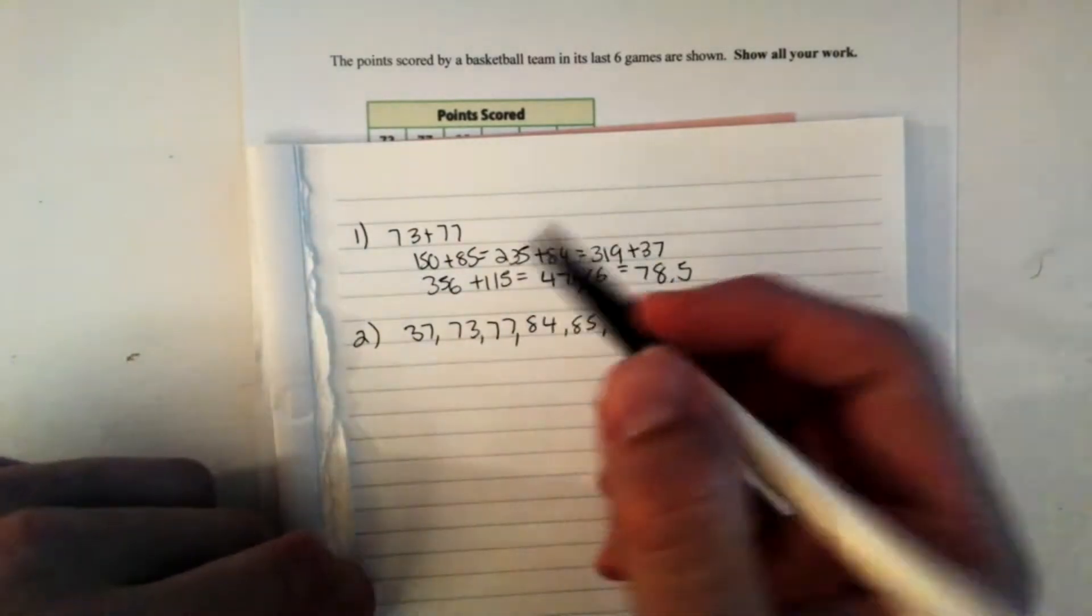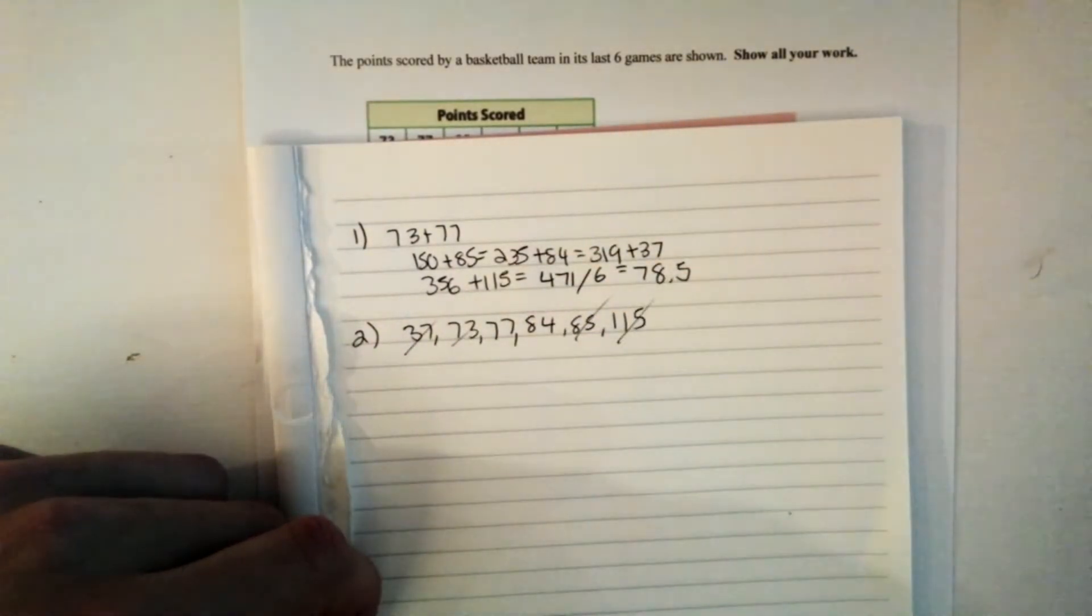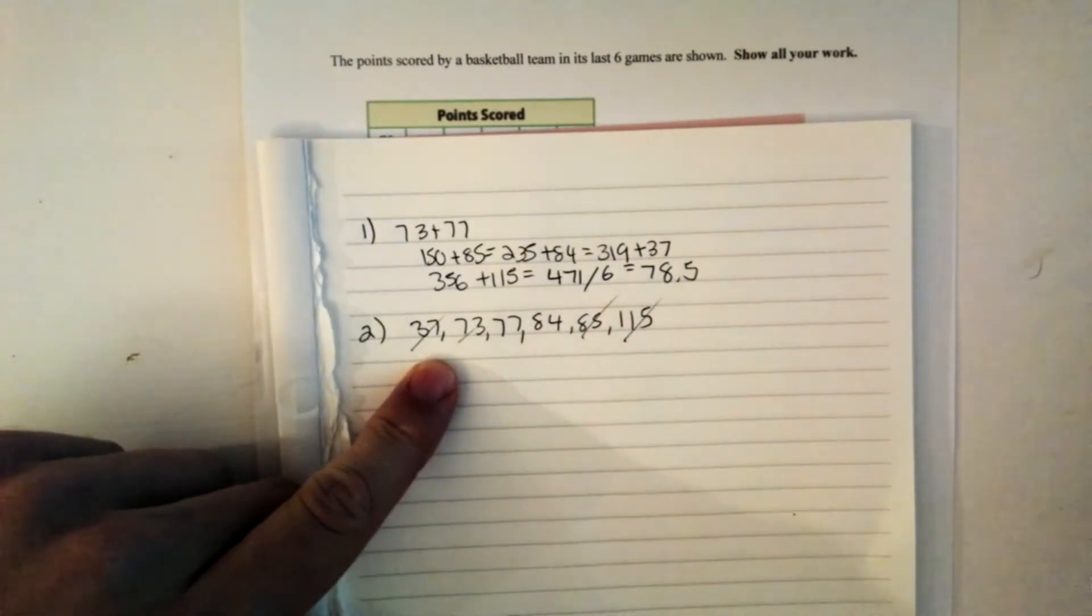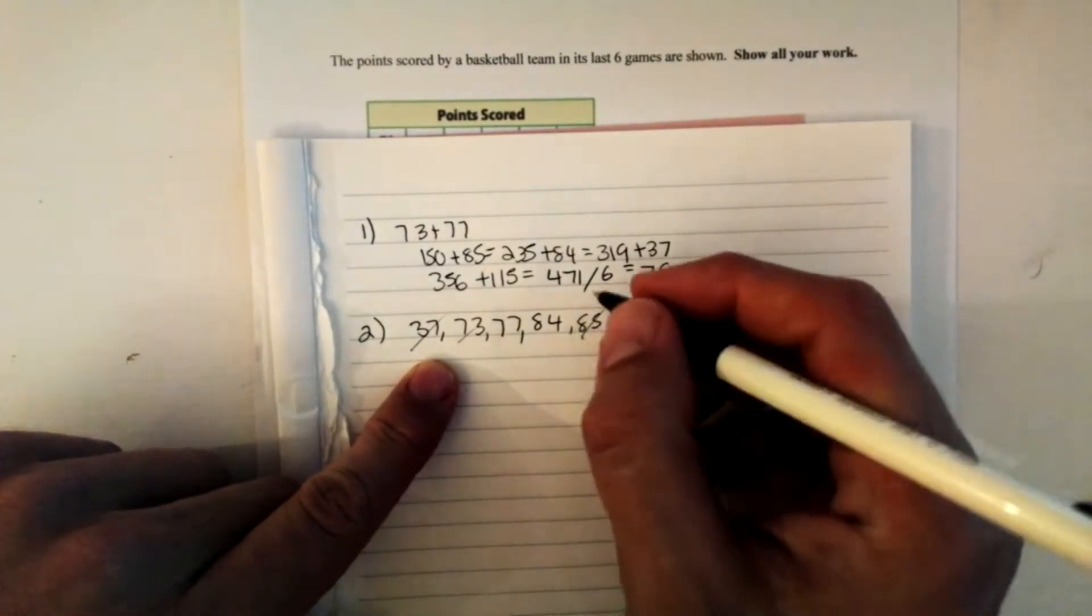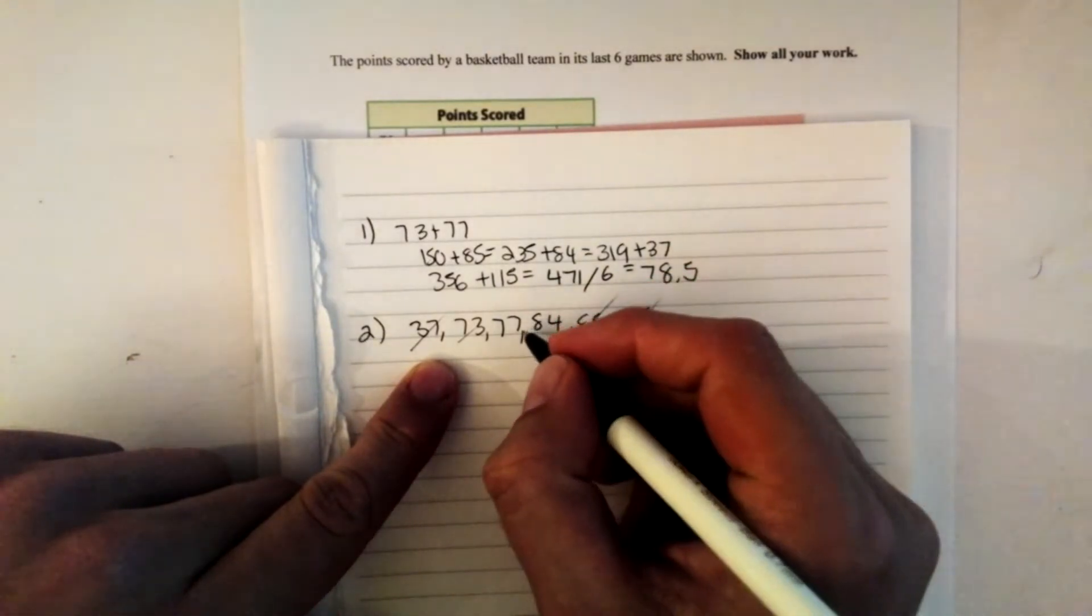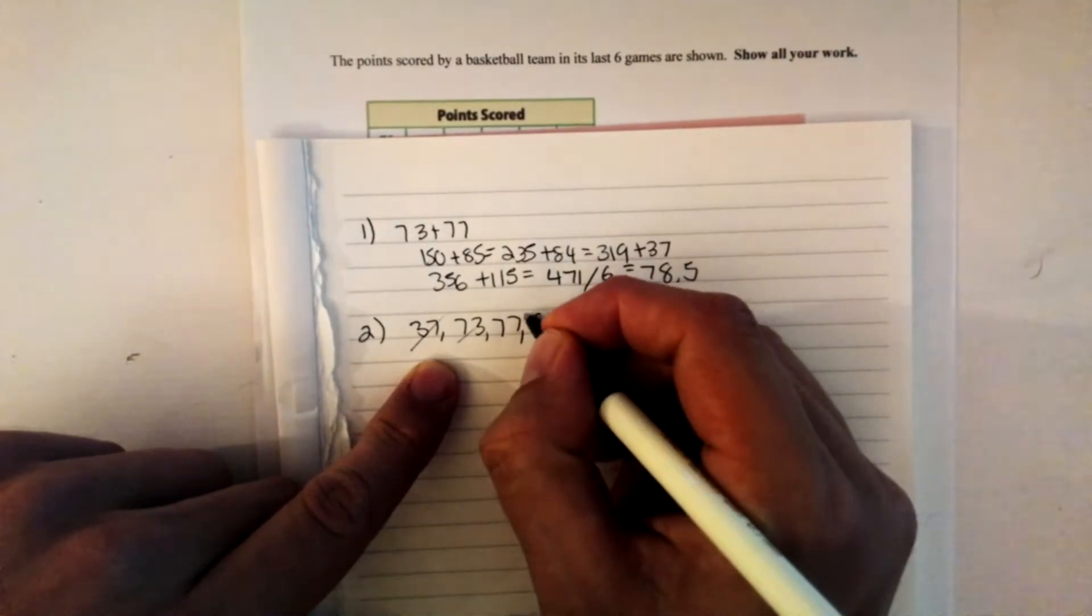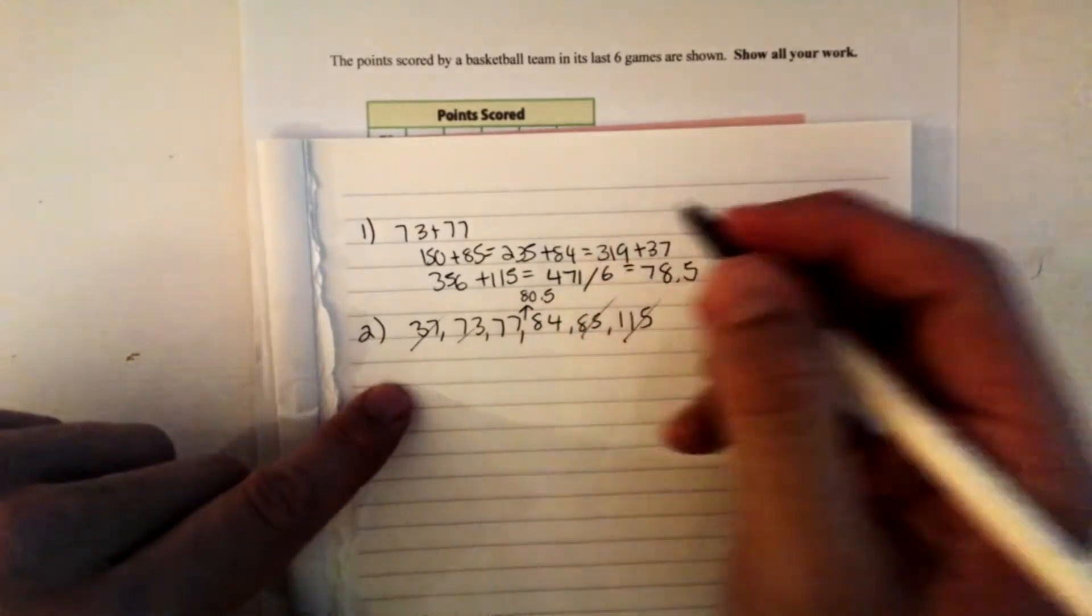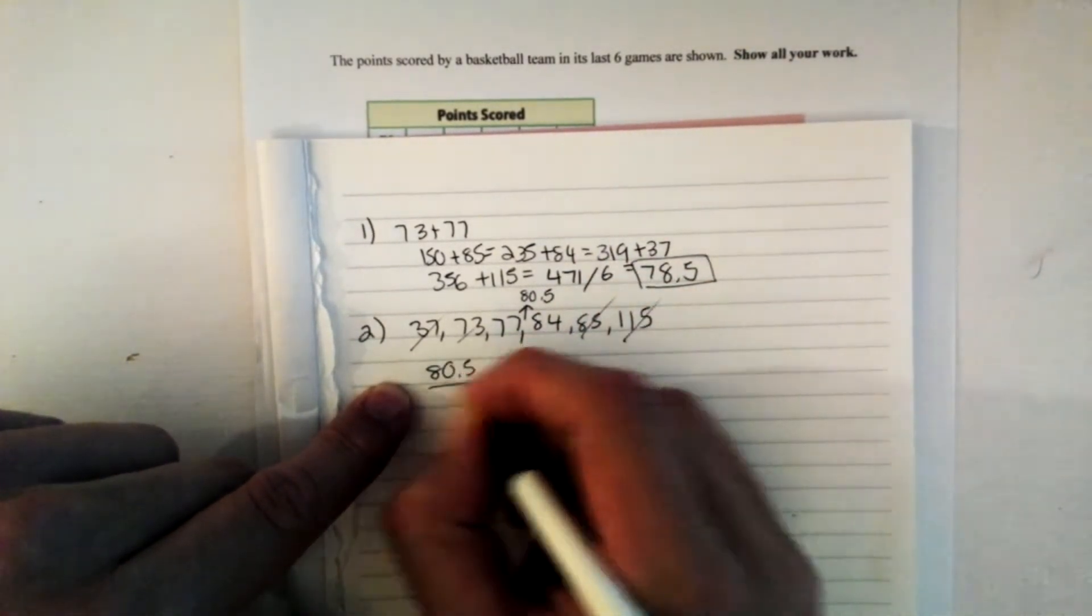So what I'll do to find the middle number is I'll mark off each side until I get to the middle. Notice how I get even numbers on both sides. Now I've got to find the middle number between 77 and 84. So what I need to do is I need to add these up and divide by 2. When I add these up and divide by 2, I end up with a median of 80.5. So my median then for number 2 is 80.5.